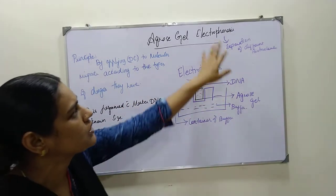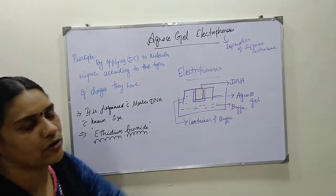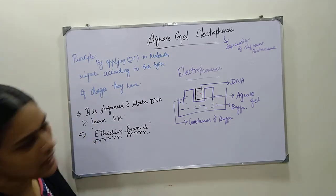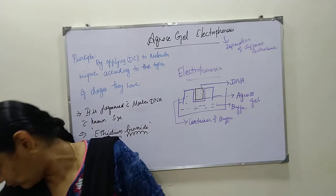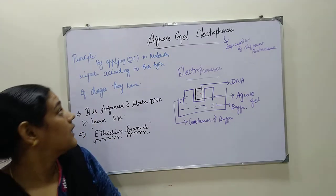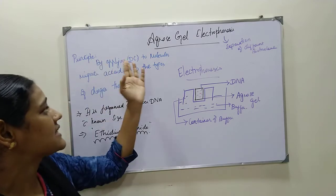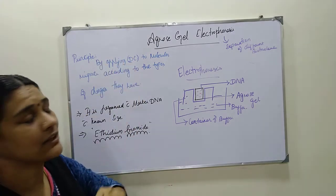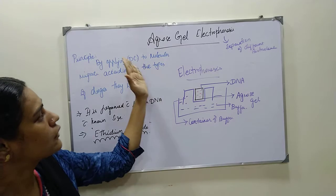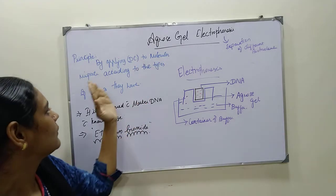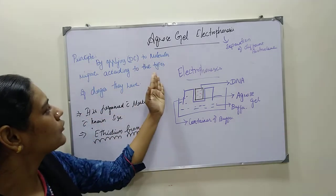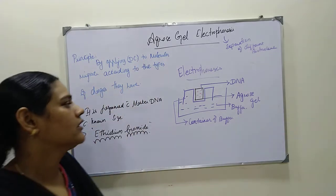This is just the introduction to agarose gel electrophoresis. Next I am coming to the principle of this agarose gel electrophoresis. The principle is: by applying a DC — that is direct current — the molecules migrate according to the types of charges they have.